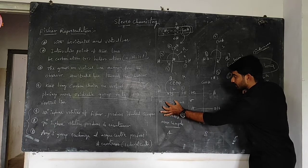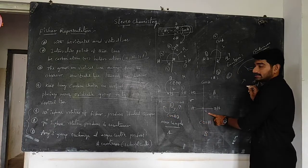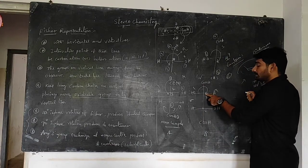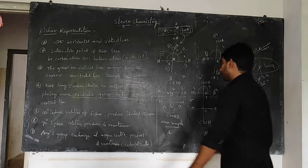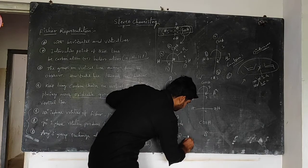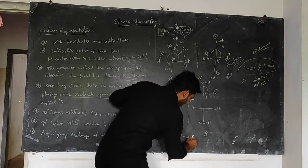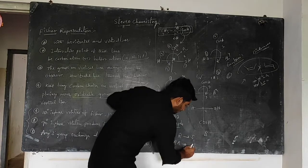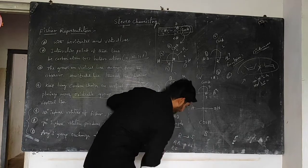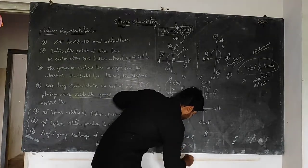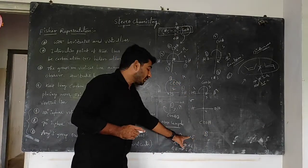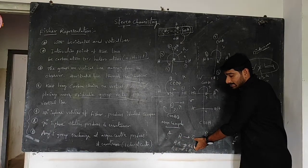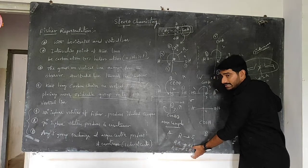For the second active form molecule, checking the configuration: 1→2→3 likewise direction, but the least priority group is on horizontal line — so R becomes S. The stereochemistry shows S at C1 and S at C2. For enantiomers, both chiral centers must have opposite configurations — one molecule RR and the other SS, or one RS and the other SR — they must be exactly different.